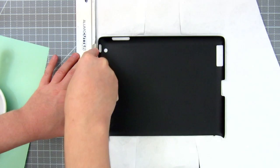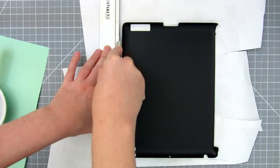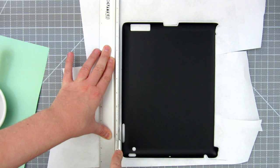Then cut the excess paper off on the lines you traced. I'm not going to fold the paper over onto the inside because then the iPad will not fit in snug.